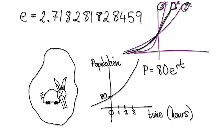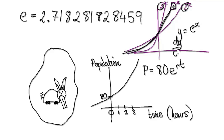There's a base here — when you differentiate it, so let's say you've got a graph like this, when you differentiate it, it would be its exact same self.